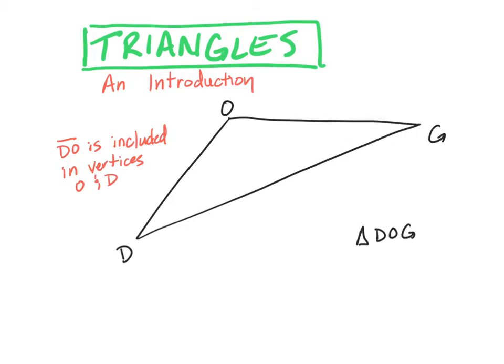Okay, that's one thing you could say. Included just means it's between. So DG is included in D and G, and side OG is included between vertices O and G. You can also say something else: that DO is opposite angle G. So side DO is opposite angle G. Side OG is opposite angle D, side DG is opposite angle O. So just a few other things you could say in terms of just basic ideas of triangles.